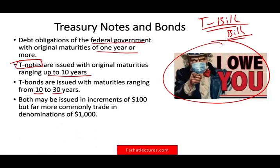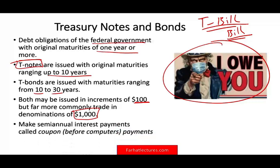Both T-notes and T-bonds usually pay interest on a semi-annual basis — twice a year. The interest is called a coupon. The reason it's called a coupon is because before computers existed, when you bought those T-notes and T-bonds, you had a piece of paper you had to clip and attach as a coupon. You would show the coupon and they would give you the payment based on it.